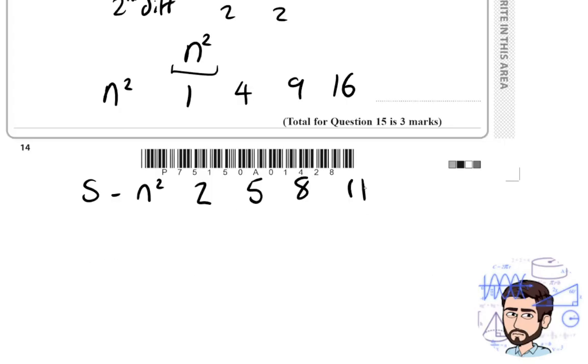Now there's something unique about these numbers I've just written down, is that this is a linear sequence. It goes up by 3 each time. You add 3 each time to get the next term. So I know what the nth term of this is. What is the nth term of 2, 5, 8, 11?